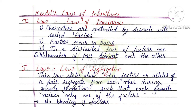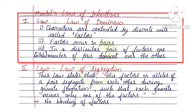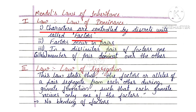First Law: it is the Law of Dominance. Characters are controlled by discrete units called factors. We call these Genes. Genes are the Functional Unit of Inheritance.